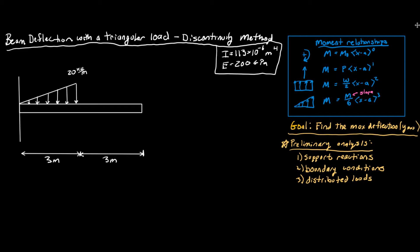For a cantilevered beam at the wall, what are our boundary conditions going to be? At the wall, this beam can't move up and down. So at x equals zero, which is the x value of the wall, the deflection is going to be equal to zero. And also, at x equals zero, the slope is going to be equal to zero.